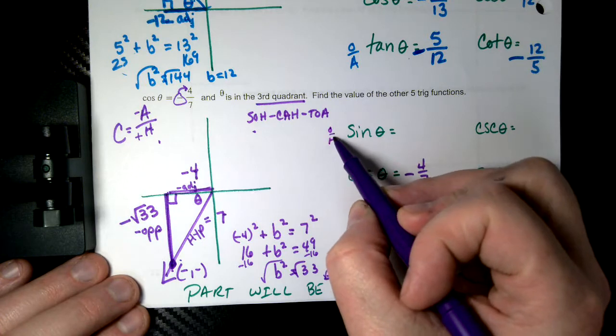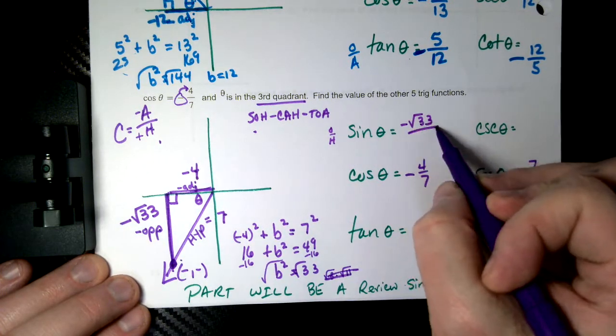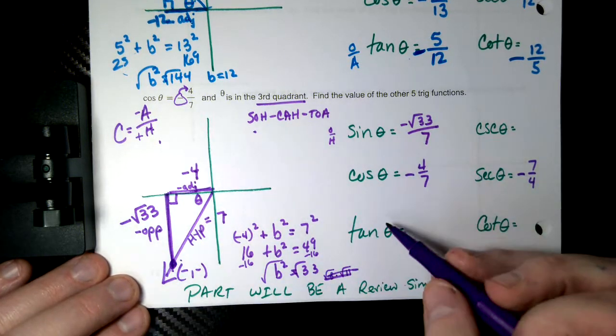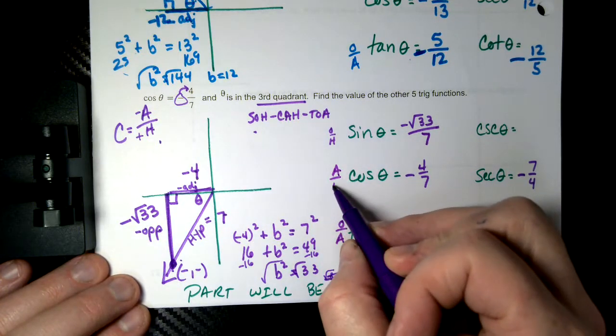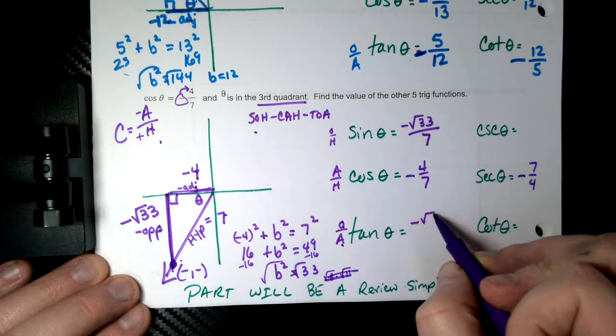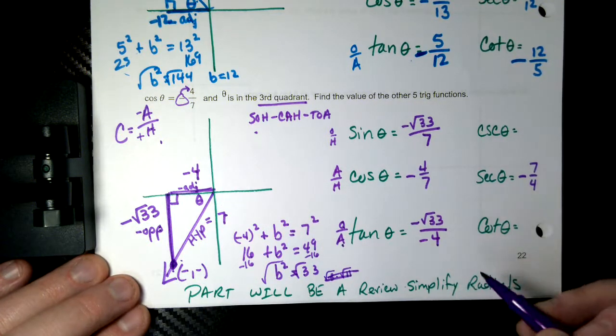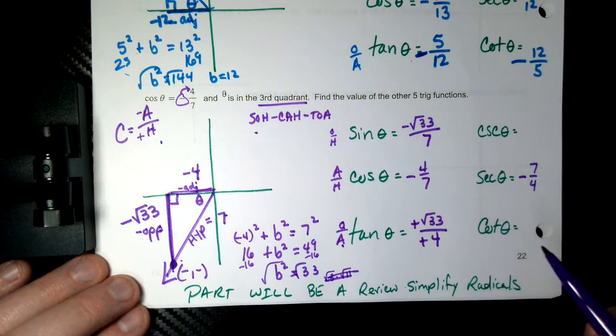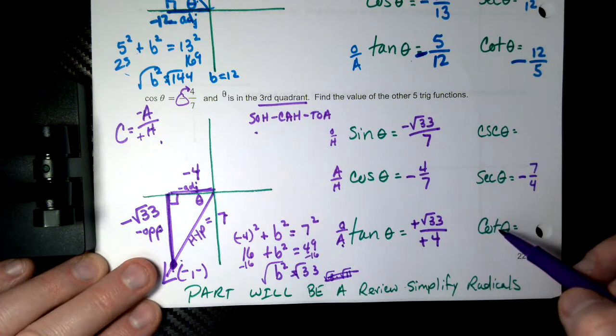Sine is opposite over hypotenuse. So I'm going to do negative root 33 over hypotenuse 7. Tangent is opposite over adjacent. This is adjacent over hypotenuse. Opposite over adjacent. So opposite is negative root 33. Adjacent is negative 4. And because it's a negative on top and a negative on the bottom, they cancel. And it's actually a positive root 33 over 4.